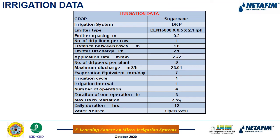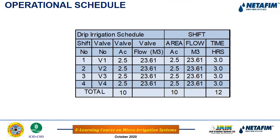Irrigation data summary: crop is sugarcane, drip line Netafim 16008, dripper spacing 0.5 m, dripper discharge 2.1 lph, lateral spacing (row spacing) 1.8 m, application rate 2.22 mm/hr, shift flow 23.61 m³/hr, peak water requirement 7 mm/day, 4 shifts, maximum discharge variation on drip line 7.5%, daily duration 12 hours, water source is a well. The operational schedule shows 4 shifts of 2.5 acres each, flow rate 23.6 m³/hr per shift, each shift running 3 hours for a total of 12 hours/day.